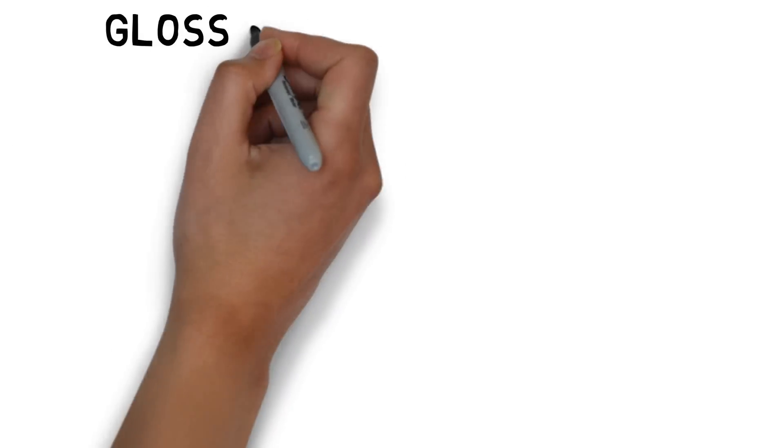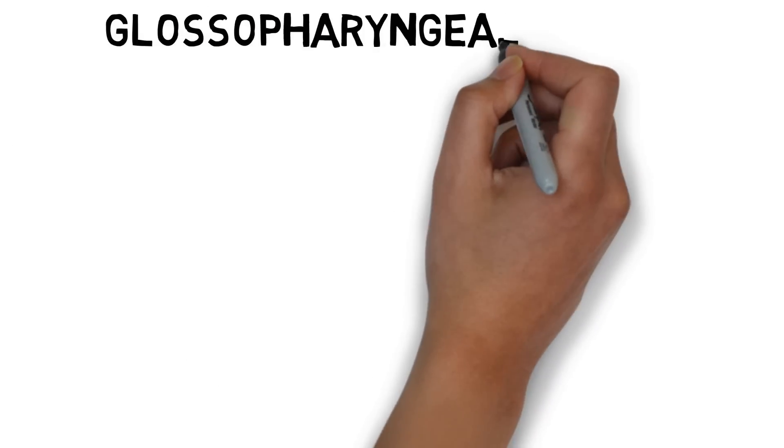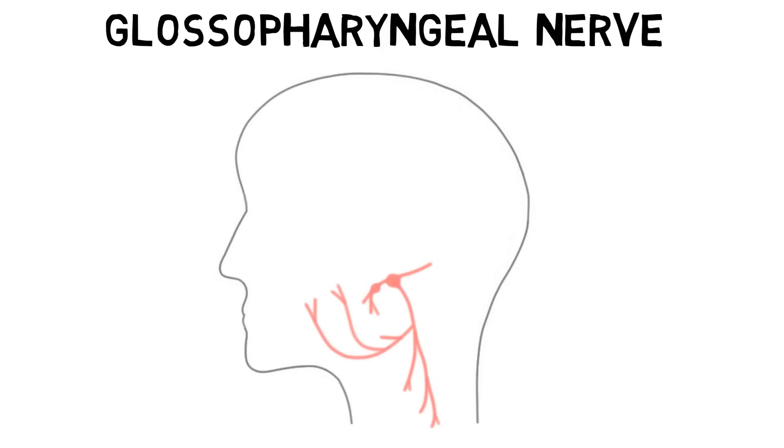The glossopharyngeal nerve is associated with the tongue and the pharynx, or throat, and has both sensory and motor functions.